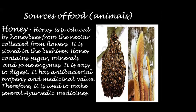Another very important source of food that we get from animals is honey. Honey is produced by honeybees from the nectar collected from flowers and is stored in beehives. Honey contains sugar, minerals and some enzymes. It is easy to digest, has antibacterial properties and medicinal value, and is therefore used to make several Ayurvedic medicines. An enzyme is defined as a chemical substance that helps in bringing about changes to certain other substances without undergoing any changes in itself.